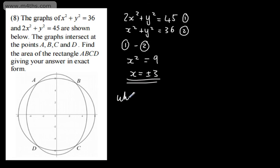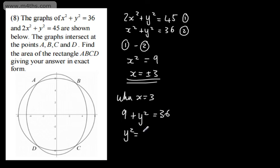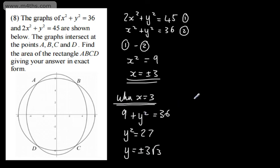When x equals positive 3, substituting into equation 2, we get 3 squared plus y squared equals 36, so 9 plus y squared equals 36. Subtracting 9 from both sides, y squared equals 27. Taking the square root, y equals plus or minus the square root of 27, which in exact form is plus or minus 3 root 3.